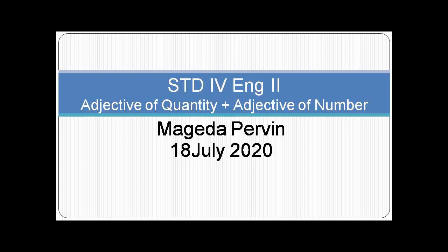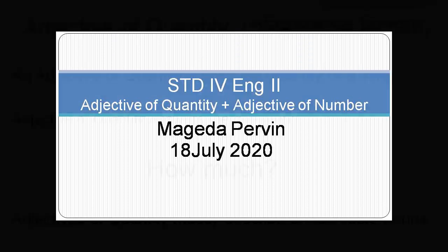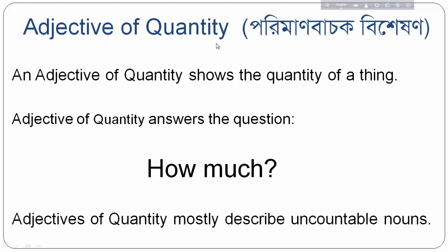Today we will learn adjective of quantity and adjective of number. Adjective of quantity means in Bengali, 'poriman bachok bisheshan'. An adjective of quantity shows the quantity of a thing. Those adjectives which describe the quantity of something are called adjectives of quantity.